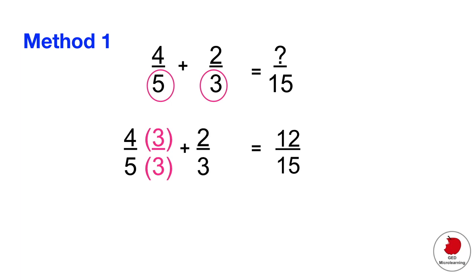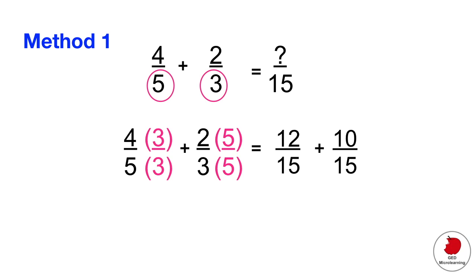Now do the same thing with the second fraction. The denominator is 3, and to get it up to 15 you multiply by 5. So multiply the bottom by 5 and also the top by 5 — you end up with 10 over 15. Now we have a common denominator of 15. All you have to do is add the top numbers: 12 plus 10 equals 22 over 15.